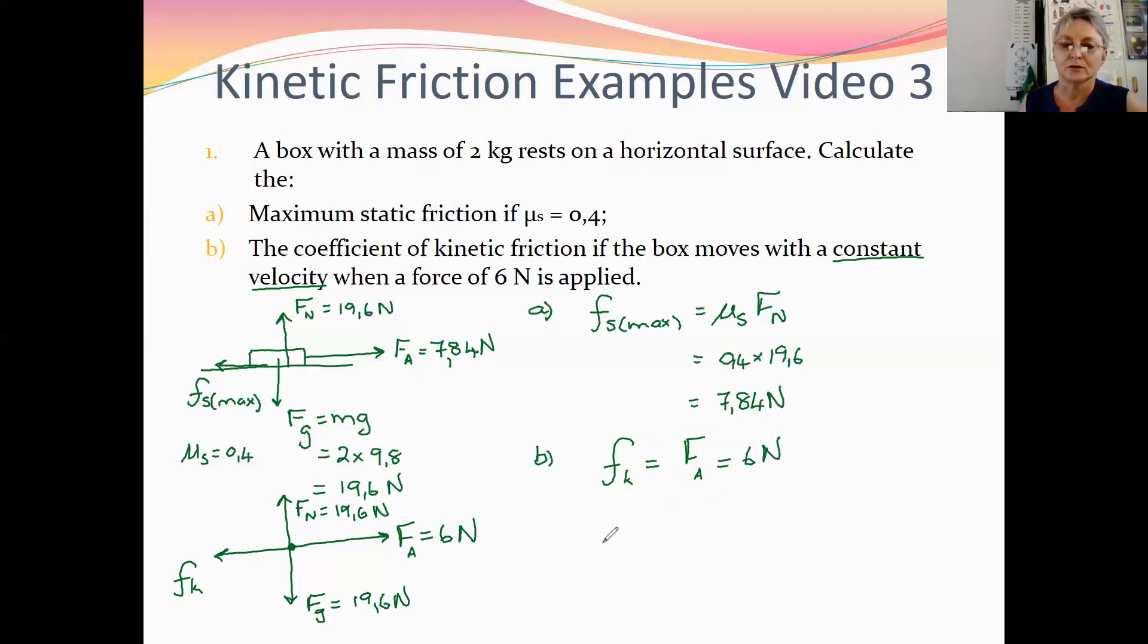So to calculate the coefficient of kinetic friction, we need the ratio between the kinetic force and the normal force, which is 6 divided by 19.6. 6 divided by 19.6 gives us an answer of 0.306, which we could round off to 0.31.